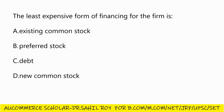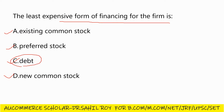Our next question: the least expensive form of financing for the firm is — Option A: existing common stock, Option B: preferred stock, Option C: debts, Option D: new common stock. The correct answer is Option C: debts. When a company raises funds from the financial market, debt is the cheapest source and equity shares are the most expensive. Most expensive is equity shares and least expensive is debt.